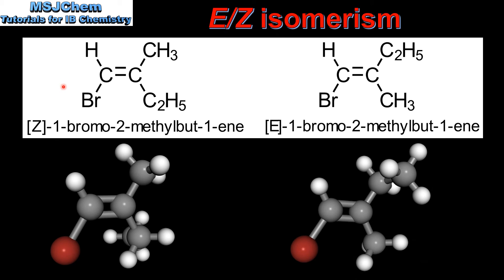The molecule we just looked at is Z-1-bromo-2-methylbutonine. The molecule on the right has the bromine atom and the C2H5 group on opposite sides of the double bond, therefore it's the E isomer, named E-1-bromo-2-methylbutonine.